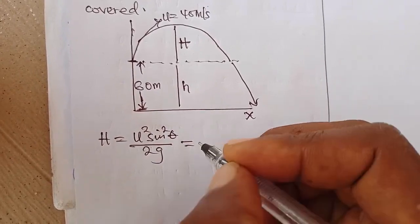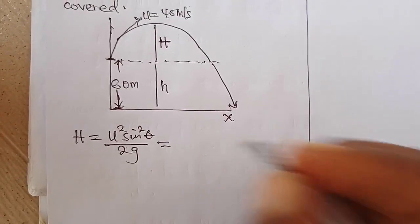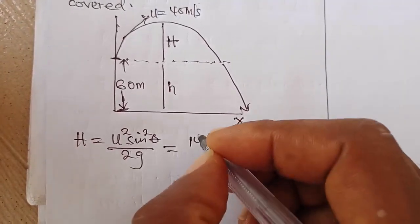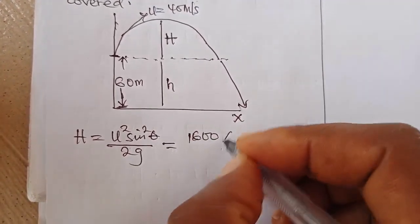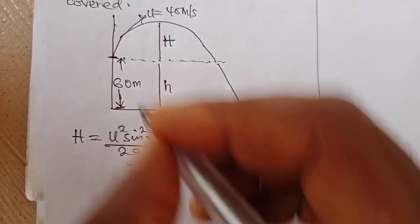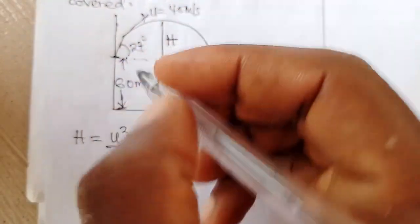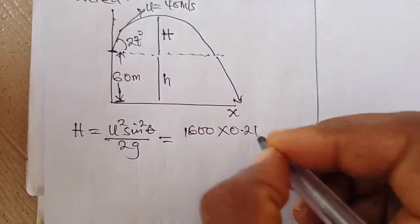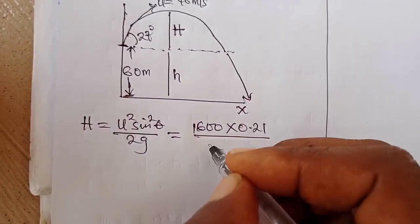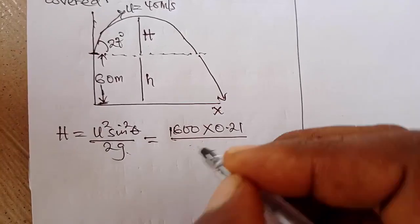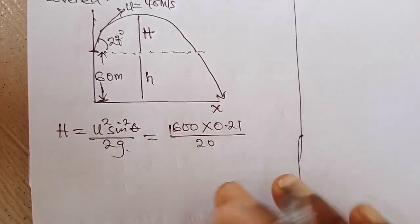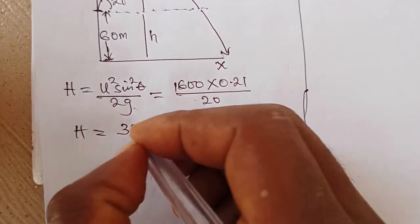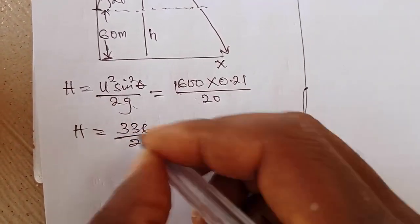For us to get the height, it means our u is 40 squared, which is 1600, times sine 27 degrees, which is 0.21, over 2 times 10, which is 20. So what we have is that our h is 336 over 20, and if we divide that we have 16.8 meters.